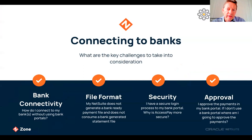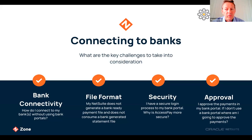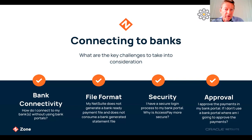There are four main challenges with bank connectivity. The first is connectivity itself — how do you actually connect your NetSuite system to your bank? The answer depends on the payment type and what your bank offers as corporate connectivity. For most banks there are a number of channels: host-to-host, API, Swift, eBics, BACS, and more. AccessPay solves this problem for one bank or multiple banks. The second challenge is file format — the bank may require a specific format with certain tags or fields. The situation becomes more difficult with multiple payment types and multiple banks. AccessPay addresses this by accepting one payment format from NetSuite and generating a bank-ready file on the way out.